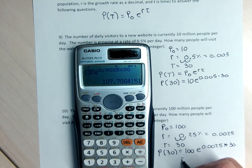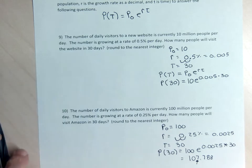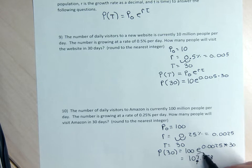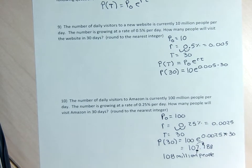My calculator gives me 107.788 million people. I'm rounding to the nearest integer — it's either going to stay at 107 million or that 7 is going to round up. The number after the decimal is 8, which is 5 or bigger, so I'm going to round up and write an answer of about 108 million people per day will visit Amazon daily in 30 days.